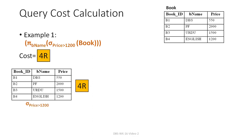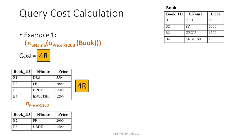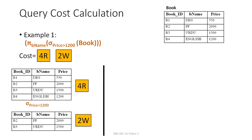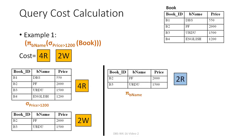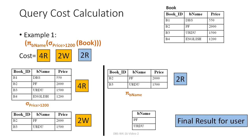Then the operation is applied — for example, greater than 1200 — so we have 2 rows. These 2 rows need to be written to memory, so 2 write operations. Then the next operation should read those 2 rows — 2 read operations. Making the final result gives us a total of 8 read and write operations for the whole query.